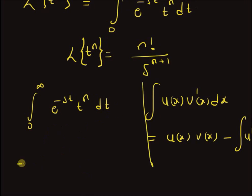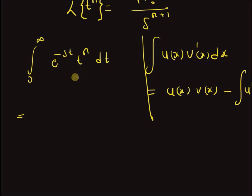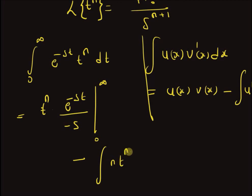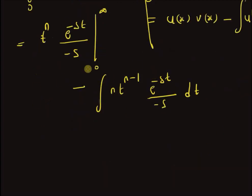Using this formula, let u = t^n. The first term is u(x)·v(x): we write t^n and then the integral of e^(-st), where we assume v'(x) = e^(-st), so v(x) = e^(-st) / (-s), since the integral of e^(-st) is e^(-st) / (-s). The limits are from 0 to infinity. The second term is minus the integral of the derivative of t^n, which is n·t^(n-1), times e^(-st)/(-s) dt.